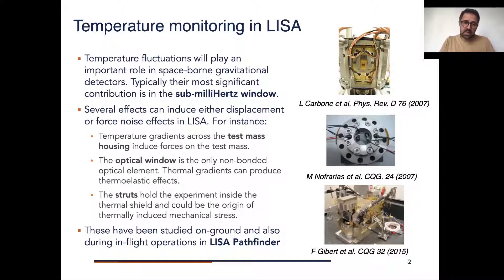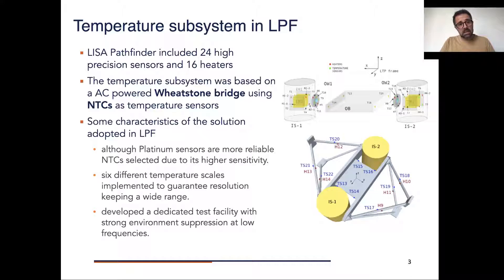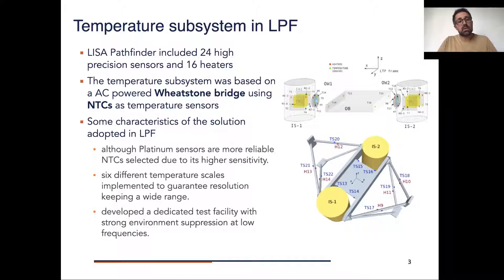All of these have already been tested on ground during the LISA Pathfinder development and also during in-flight operations. Indeed, in LISA Pathfinder we had a temperature measurement system composed by 24 high-precision sensors and 16 heaters to perform local experiments in certain locations.